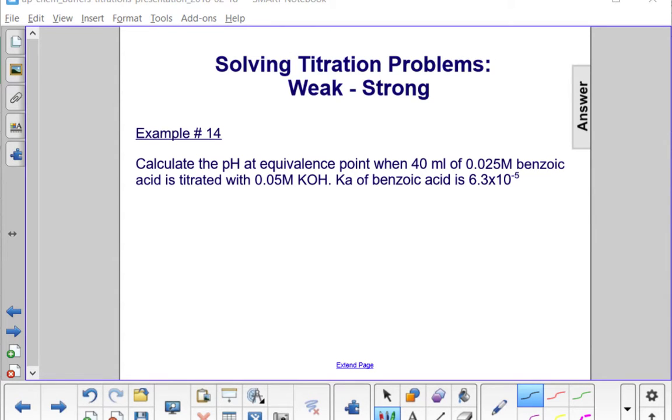Example number 14. Calculate the pH at equivalence point when 40 milliliters of benzoic acid 0.025 molar is titrated with 0.05 molar KOH. The Ka of benzoic acid is 6.3 times 10 to the minus 5.